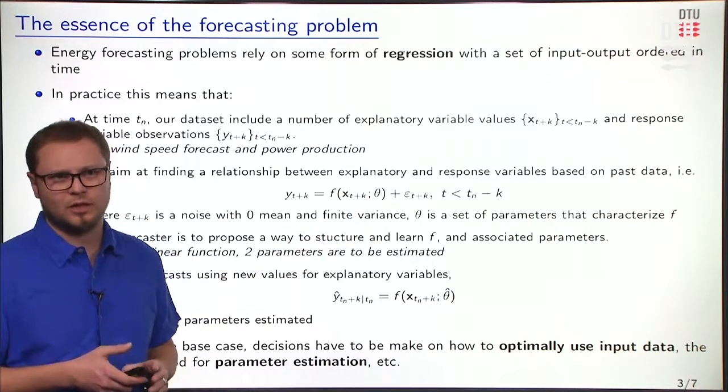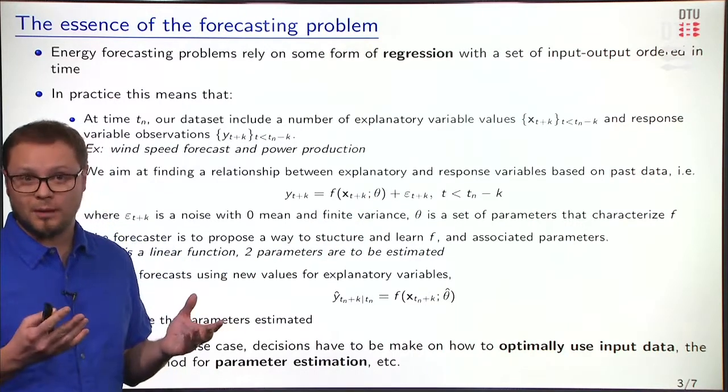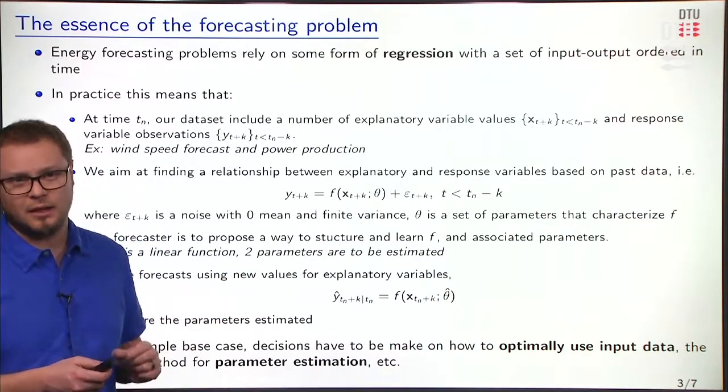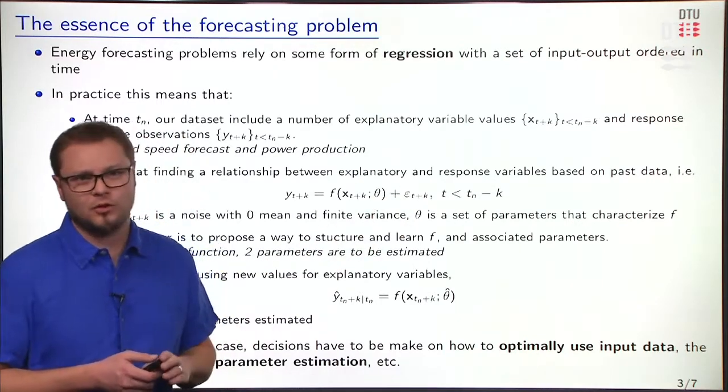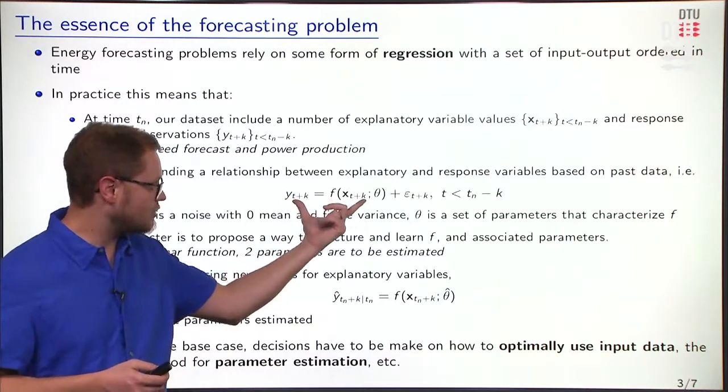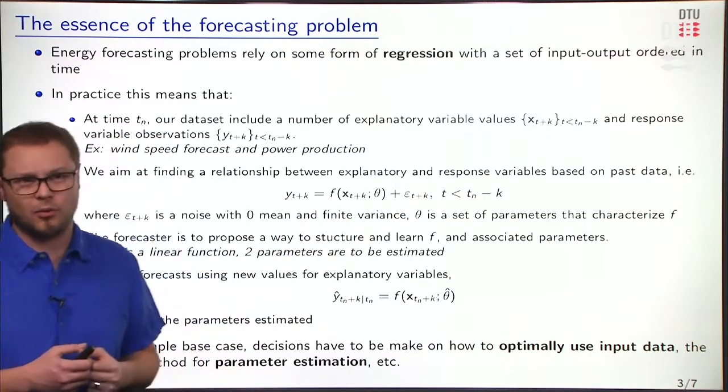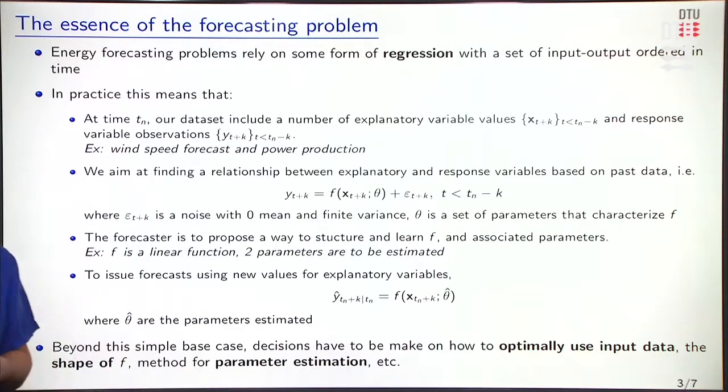For the linear regression case we considered before, there were two parameters to consider, the intercept and the slope. There is also something in our observation, it's noise. So besides this relationship, there will also be a noise component. And we assume that this noise has a zero mean and some finite variance.